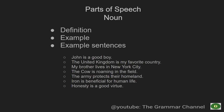I'll be detailing all about the kinds of noun in my next video. Next: 'Iron is beneficial for human life' — iron is a noun. 'Honesty is a good virtue' — honesty is an abstract noun. You will get to know all about abstract noun and the kinds of noun in the next video. I am going to explain each type of noun with example sentences, which are really easy to learn.